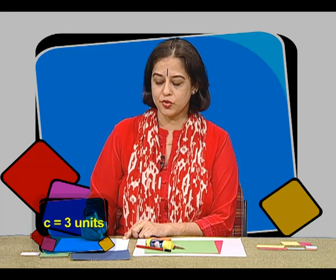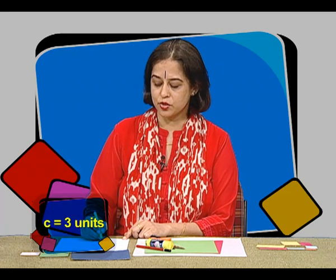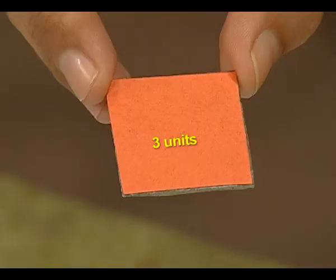Now we will take a square cut out for c². We will take a square cut out of side 3 units. This square cut out is representing c².